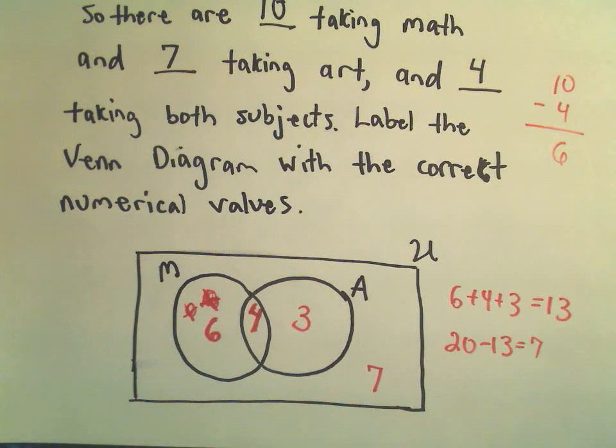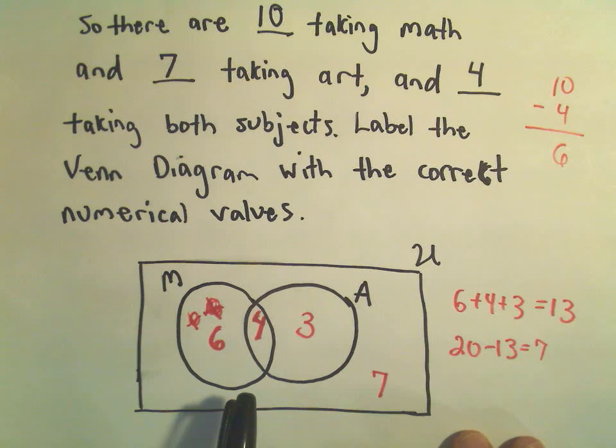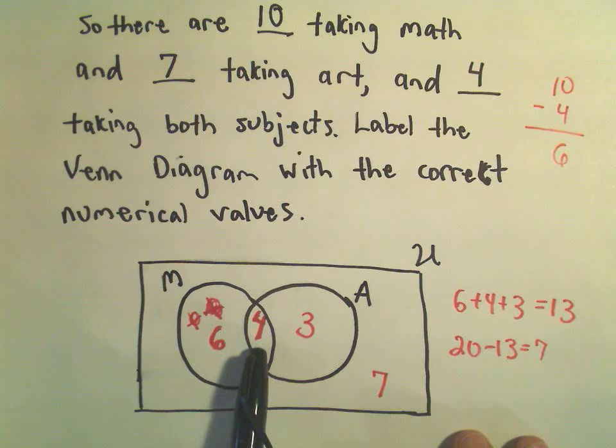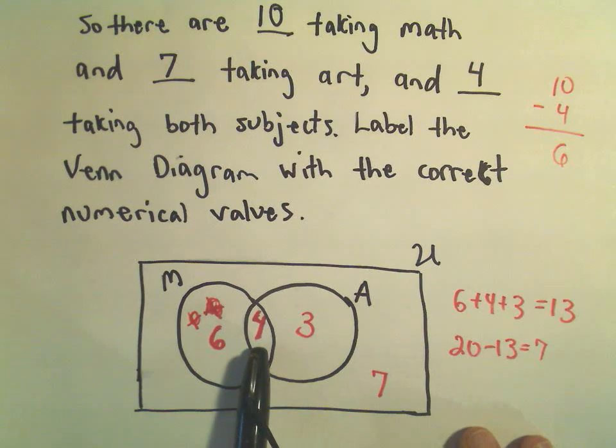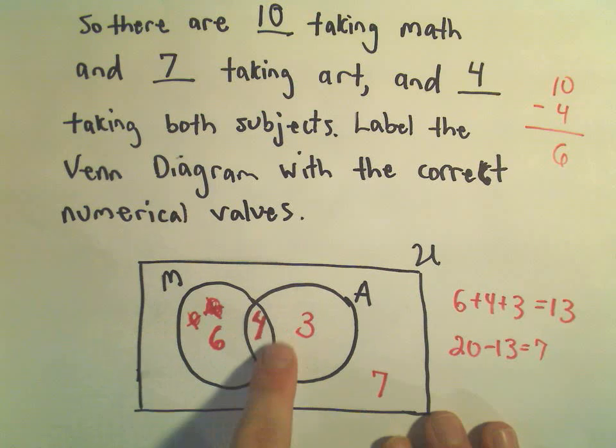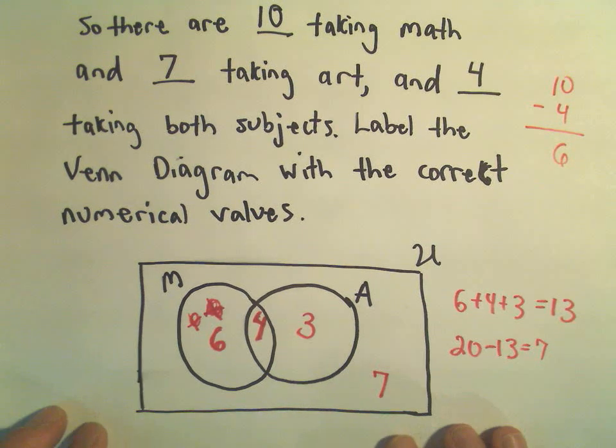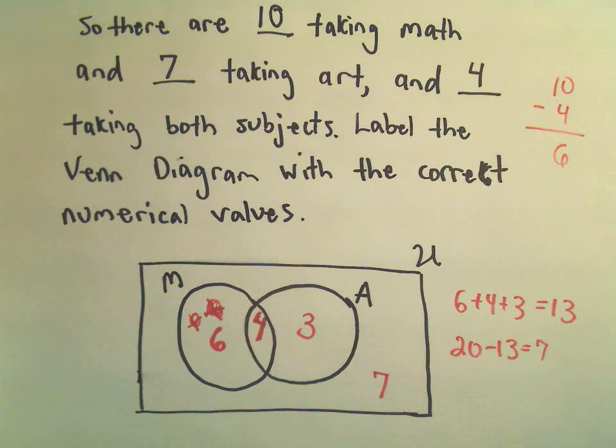So this is all a Venn diagram oftentimes tries to do. It just simply tries to give you numerical values. And again, depending on what circles you're in, it either says you have that property, or if you're outside of a circle, it says you simply don't have that property. So in another video, I'm going to talk about kind of shading regions and notation and doing some more generic stuff. But I think this is a good place to start, a nice concrete example.